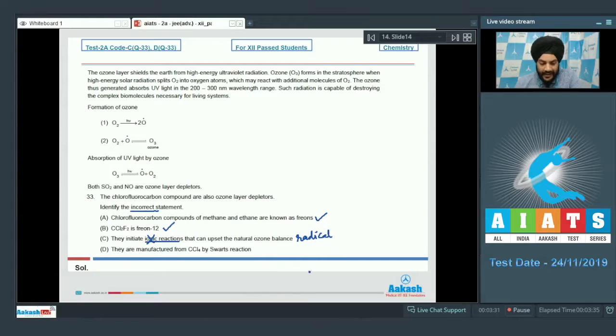Option D: They are manufactured from CCl4 by Swartz reaction - this is also correct. In the Swartz reaction, the higher halogens are replaced with fluorine. So Cl will be replaced with fluorine, leading to the formation of chlorofluorocarbons. Out of these given statements, only the statement in option C is not correct. So we have to mark option C as the answer to question 33.